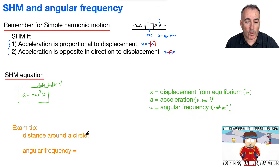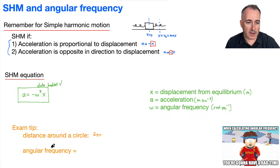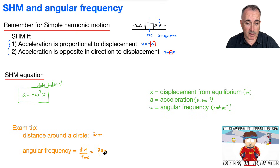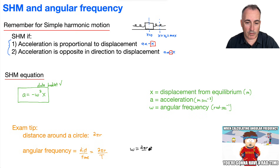Here's an exam tip about angular frequency. What's the distance if you go all the way around a circle? That's the circumference, which is 2πr. Angular frequency is kind of like a speed — it's distance over time. So the distance traveled is 2πr, divided by the time, which is the period. So angular frequency omega equals 2πr over T.